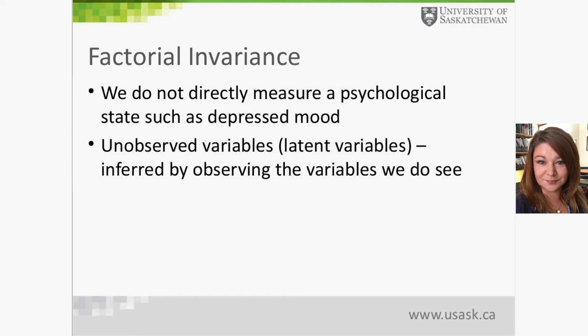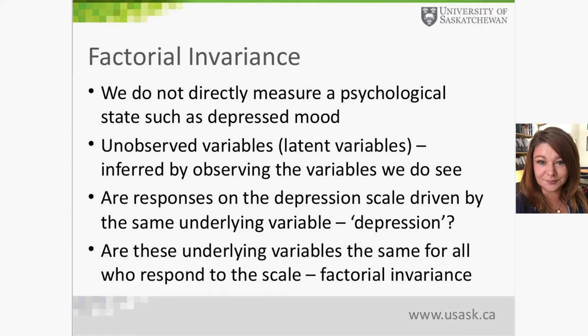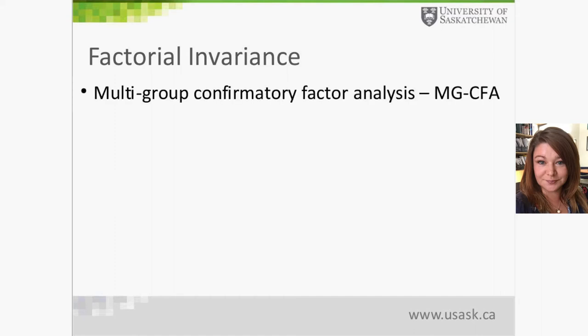Because psychological states are unobservable, we must make inferences about them from what we can observe. We have unobserved or latent variables — such as psychological state — that are inferred from observable variables like responses on a questionnaire such as the CES-D. The key question for multi-group factorial measurement is: are responses on the depression scale driven by the same underlying variable of depression, and is that underlying variable the same for all who respond to the scale? This is the basis for investigating factorial invariance.